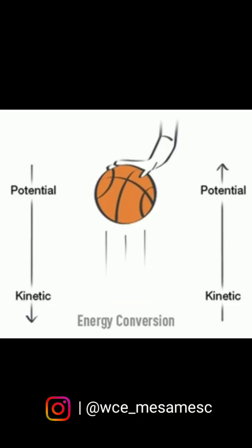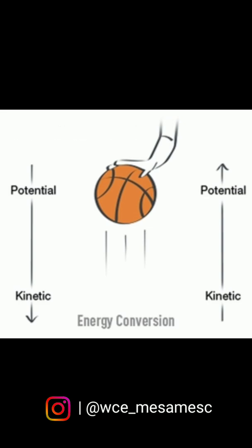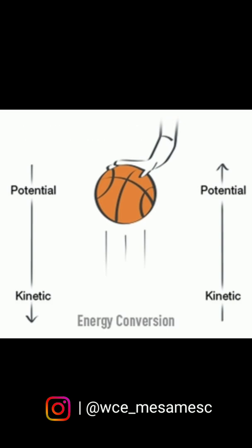When you dribble a basketball, your hand and gravity both push the ball towards the ground — that is due to the first law of motion. As it drops, the ball accelerates and speeds up — that is due to the second law of motion. The ground pushes up with an equal but opposite amount of force, resulting in the ball bouncing back — that is due to Newton's third law of motion.